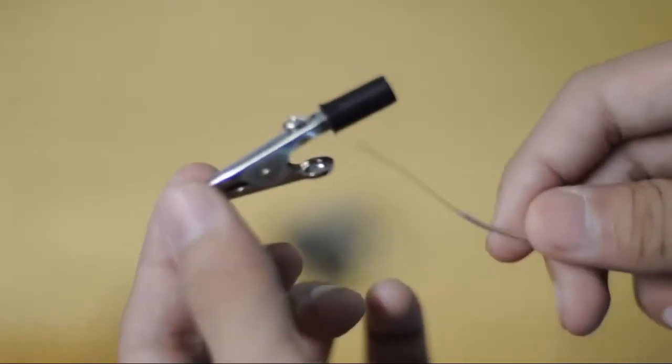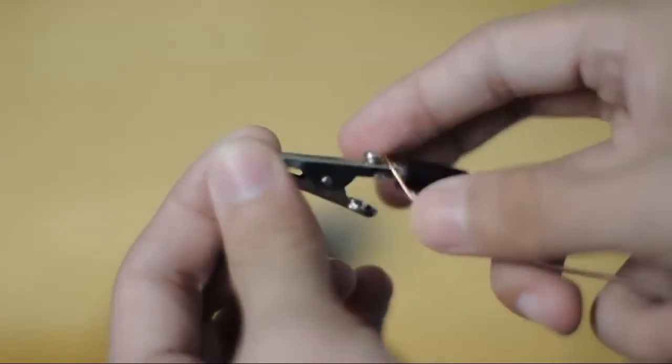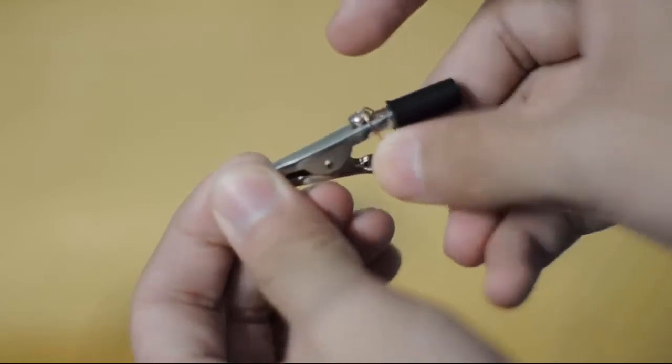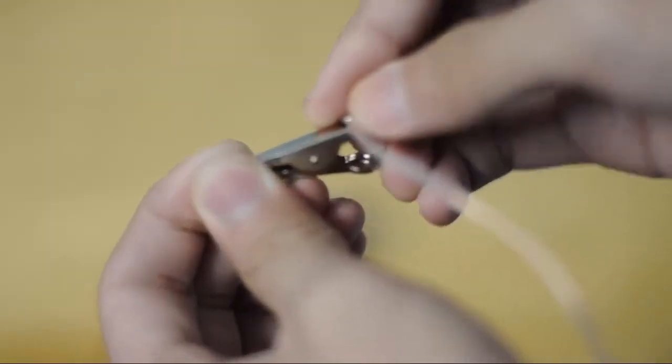Now what you want to do is you want to take the uninsulated part of the copper wire and you want to double coil it around the alligator clip. By doing this, the copper and the alligator clip will touch, meaning the electricity will transfer and the wire will not fall off.